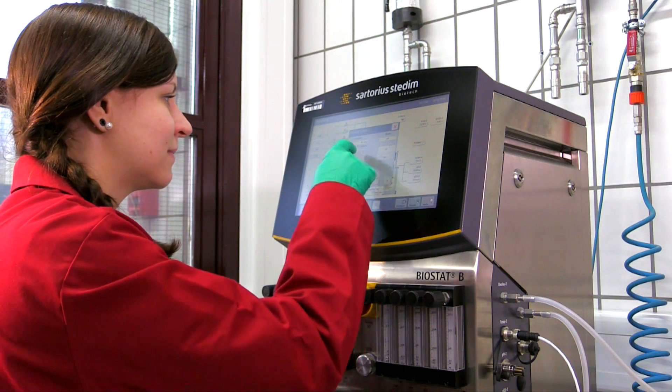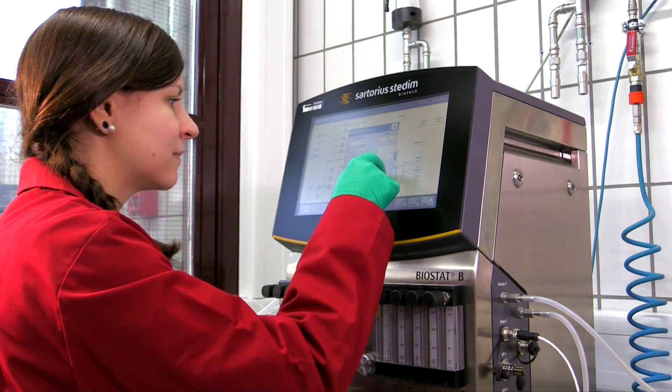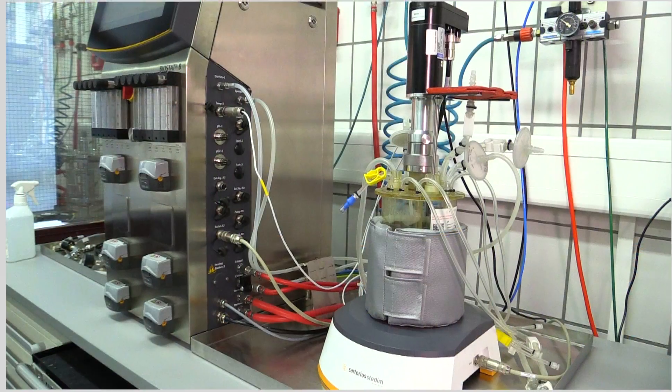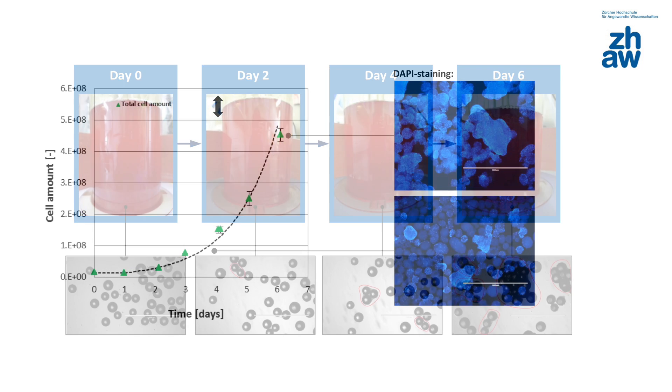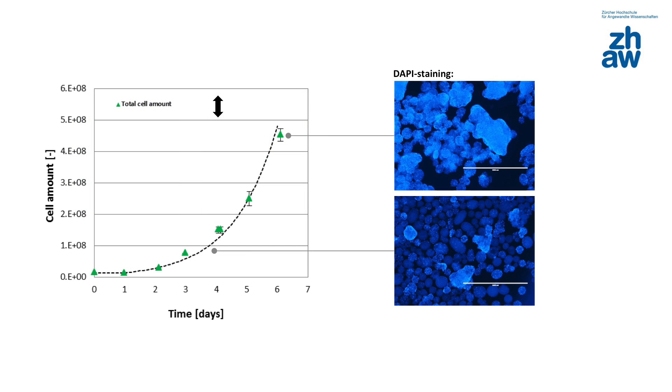Afterwards, impeller, pH and dissolved oxygen regulation are switched on and the cell expansion is continued. With increasing cultivation time, microcarrier cell aggregates become larger and reach diameters of between 2 and 3 mm at the end of the cultivation, that is, on day 6. At this point, cell density is around 1 million cells per milliliter, while cell viability is around 98%. This is the point for cell harvest.